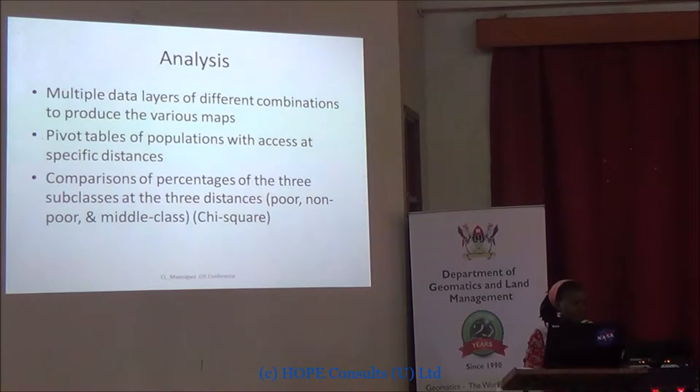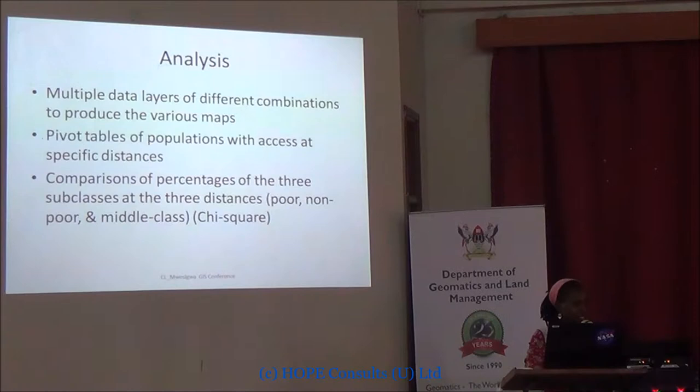For analysis, we produced a number of maps for the different things we were considering, and we also extracted information from the maps and formed pivot tables. At the different buffer distances defined, we were able to get the different proportions of the population that have access to the public dental facilities. We then compared the percentages across three income classes.